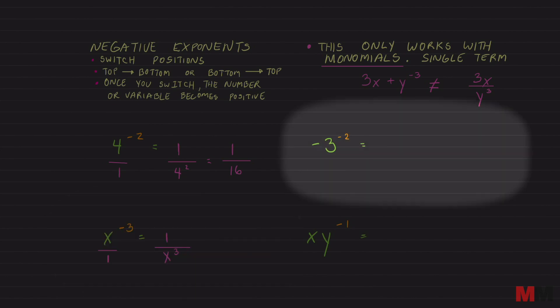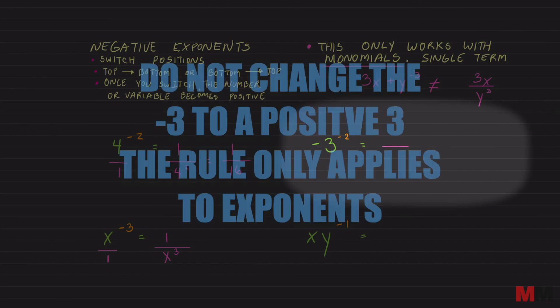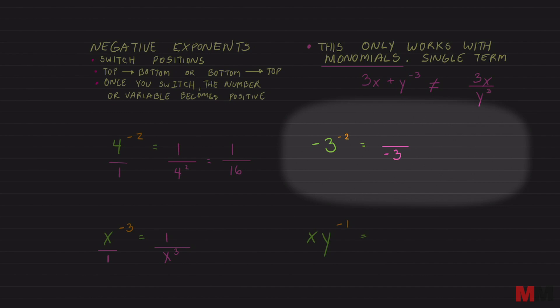What if you got a negative number with a negative exponent? The rule only applies to exponents. You are gonna flip that negative 3 from top to bottom, but it's going to remain a negative 3. The only thing that will switch is the exponent. So that was a negative 2. Since we flipped it to the bottom, that will now be just a 2. 1 on the top. From there, simplify it. Negative 3 squared is a positive 9 with a 1 on the top.